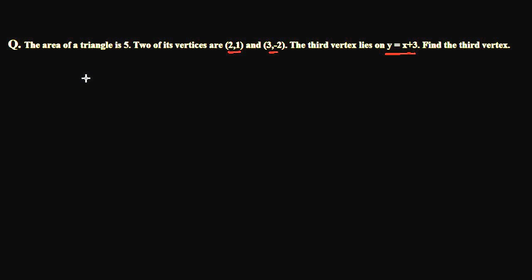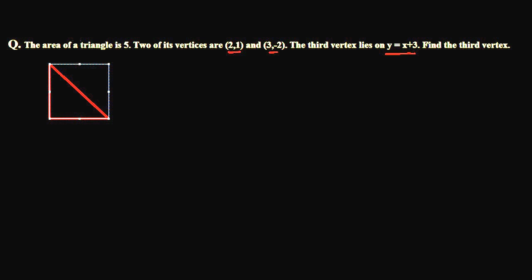Let me make you understand this question. We have a triangle — let's give the points names. Suppose the first point A is (2, -1), the second point B is (3, -2), and the third point C is (x, y), whose coordinates we don't know. We need to find this third coordinate.